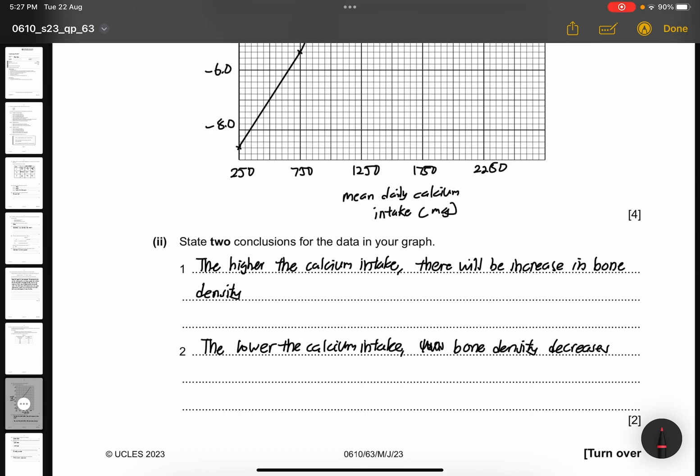Part 2. State 2 conclusions from the data in your graph. So, the higher the calcium intake, there will be an increase in bone density. Or the lower the calcium intake, the bone density will decrease.